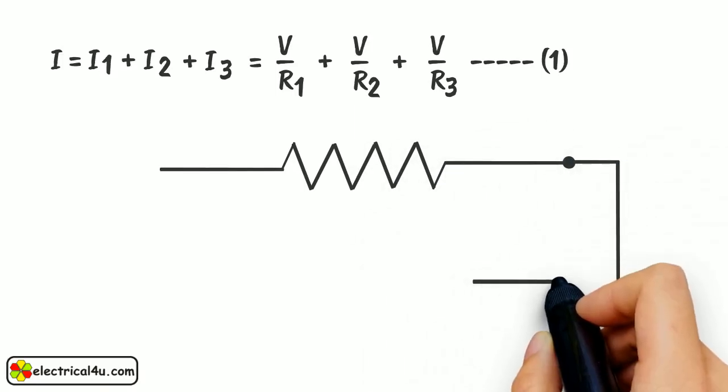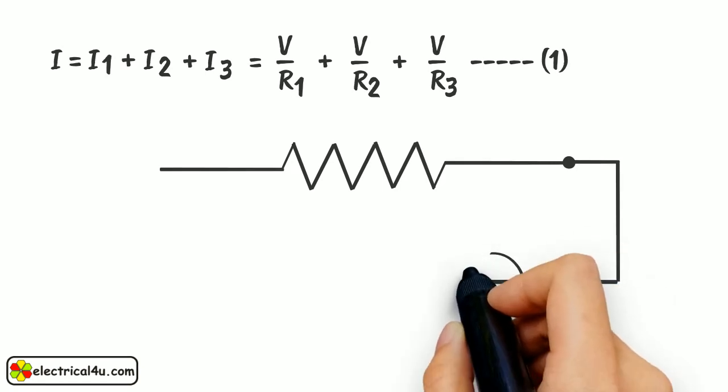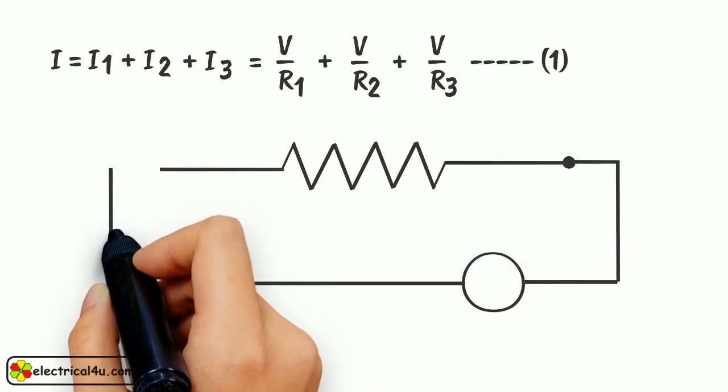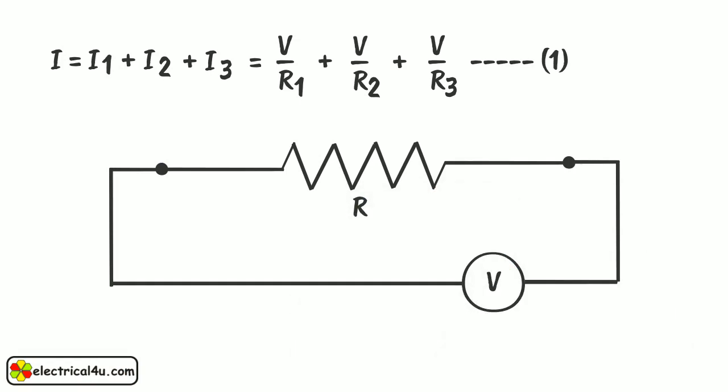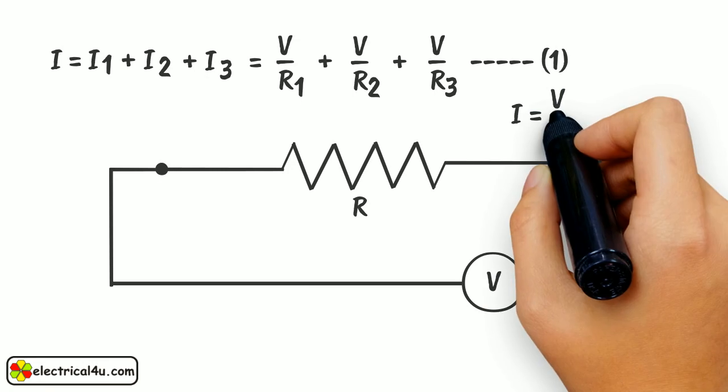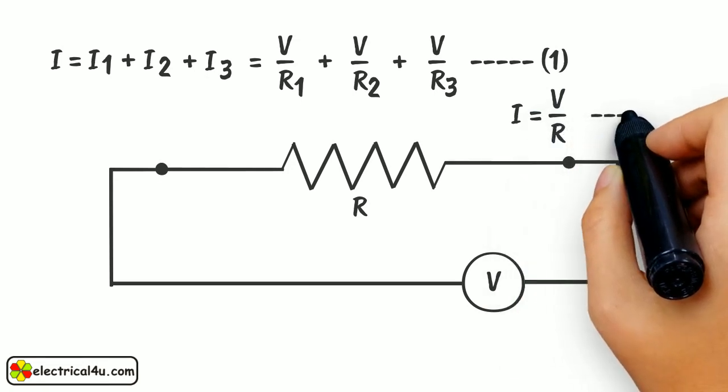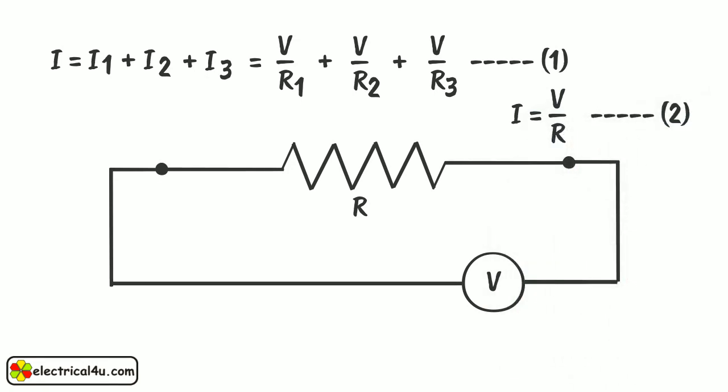Let us consider the equivalent resistance of these three resistors connected in parallel across terminals V equals R as shown. From this circuit, we can write, I equals V by R. Say this is equation 2.